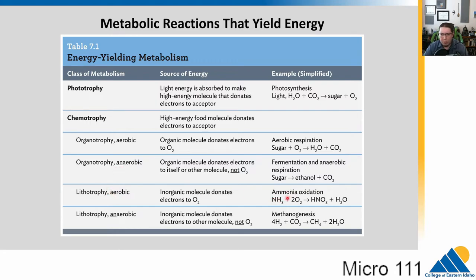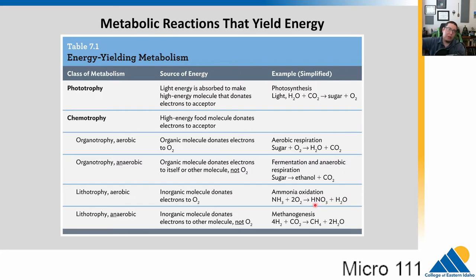Lithotrophs do similar things but use non-organic electron sources. An interesting side note: when farmers overuse nitrogen-containing fertilizers — whether synthetic nitrogen fertilizers or heavy spreading of manure — it can cause lithotrophs to proliferate, leading to high levels of nitrates as byproducts. Those nitrates can run off into water sources and cause algal blooms downstream. So there are real negatives to over-applying fertilizers, even organic ones like manure.